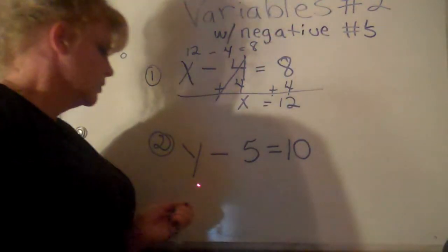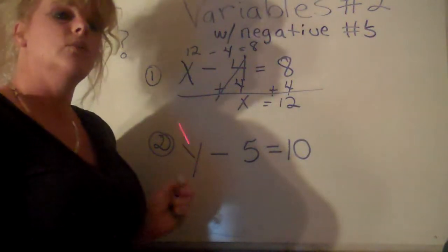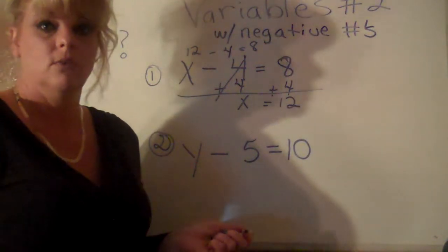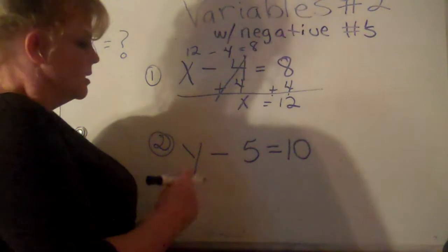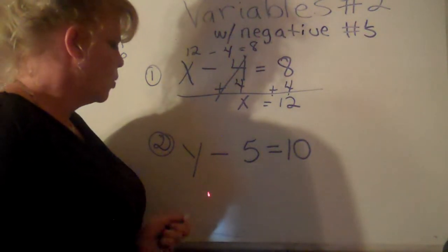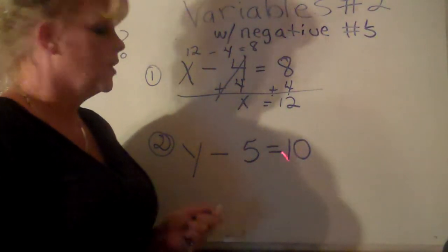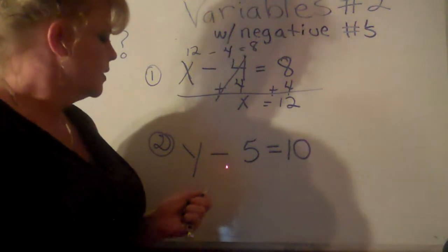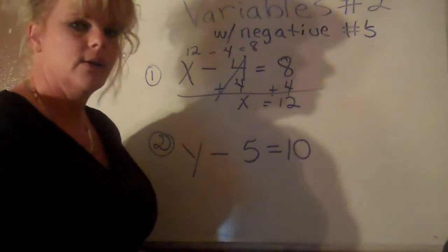The next one is a y - don't let that scare you. It's another variable. What does it mean? It means we don't know what the number is. We read the problem: y minus 5 equals 10. We're working with another negative constant.